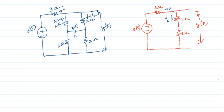State space analysis gives an idea of how the system is functioning inside by looking at the states. With this in mind, we move into the next topic: controllability and observability.